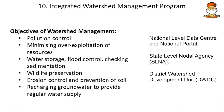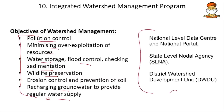The objectives of watershed management include: pollution control, minimizing overexploitation of resources (forests and river waters), water storage, flood control, checking sedimentation in rivers, wildlife preservation, erosion control, soil conservation, and recharging groundwater. Implementing agencies include the National Level Data Centre and National Portal at central level, the State Level Nodal Agency at the state level, and the District Watershed Development Unit at the district level.